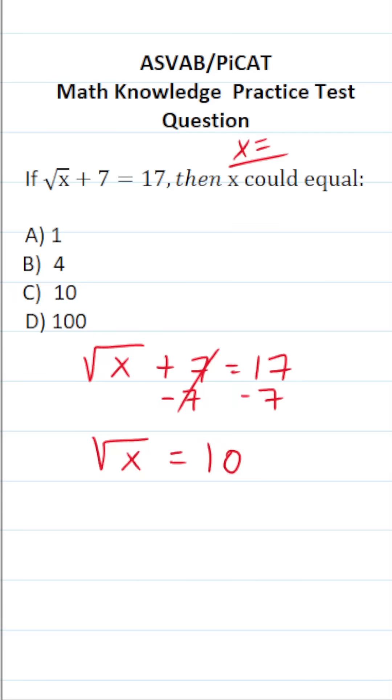Now we want to clear this square root that's on the x, and to do that we're going to do the opposite operation. That is to say, we're going to square both sides of the equation.